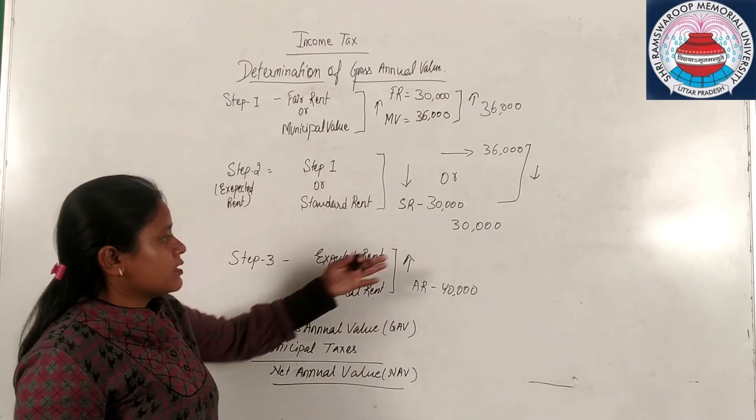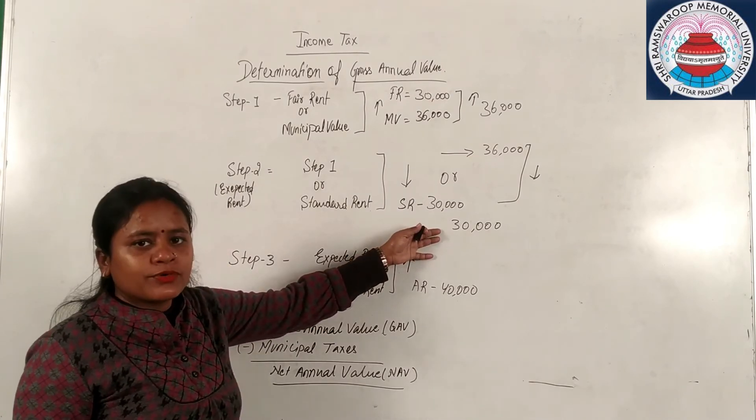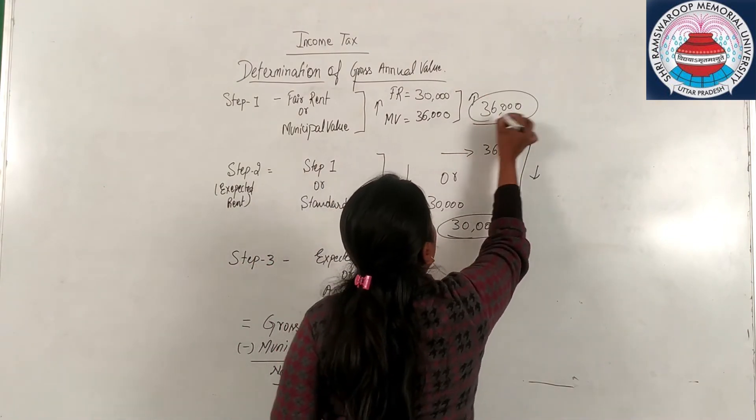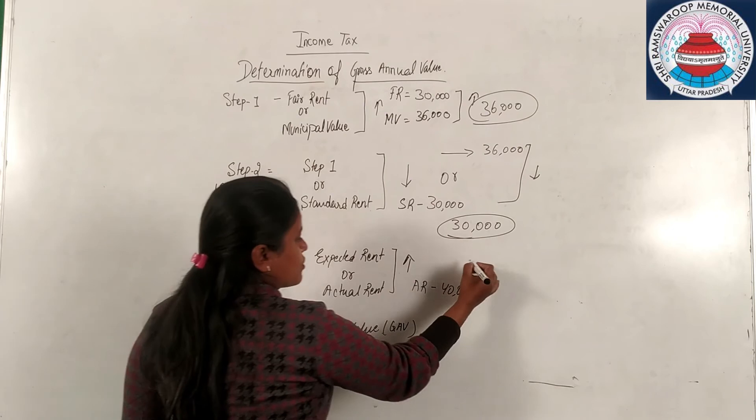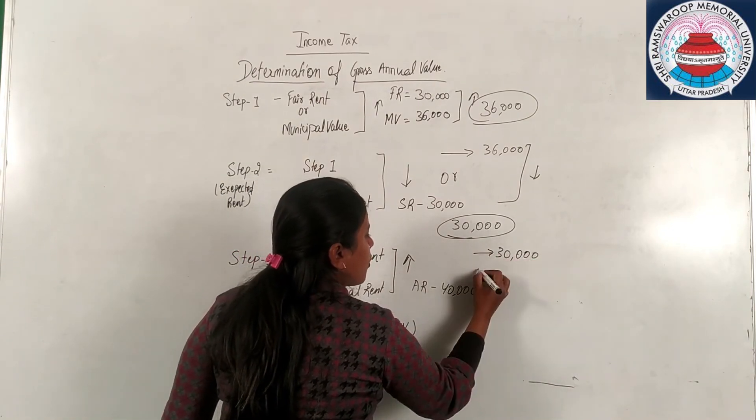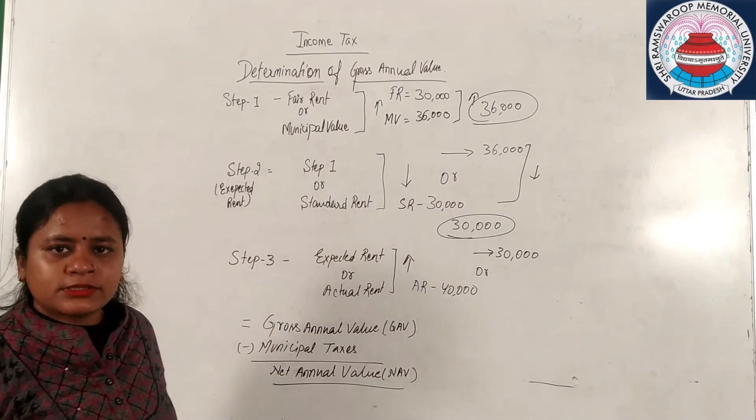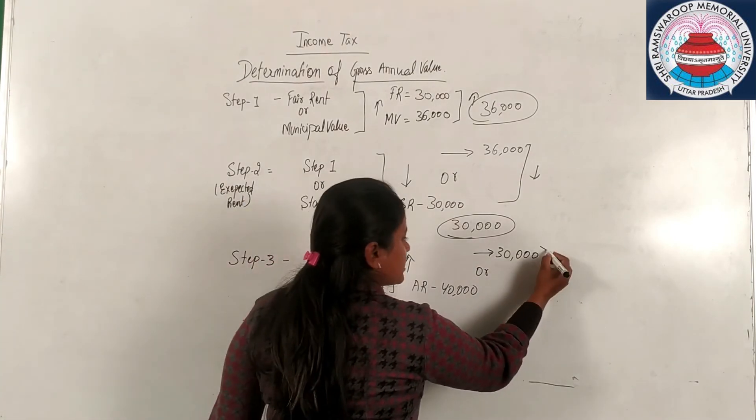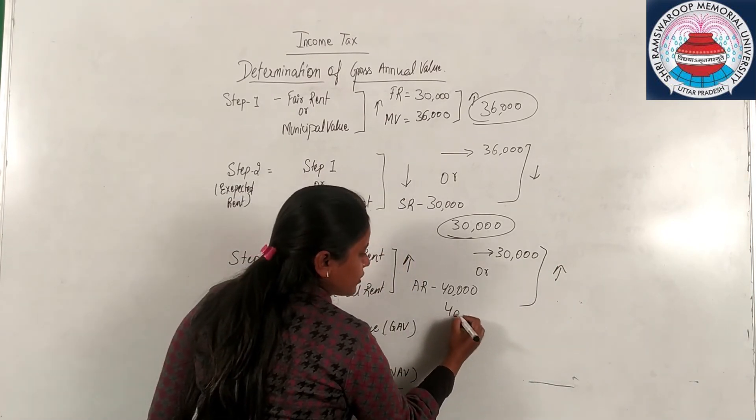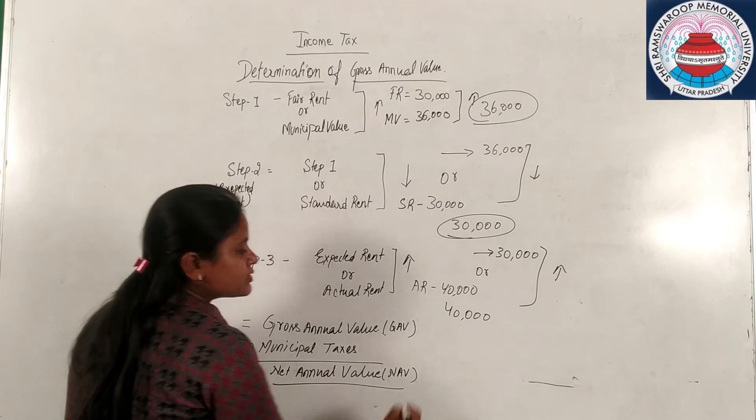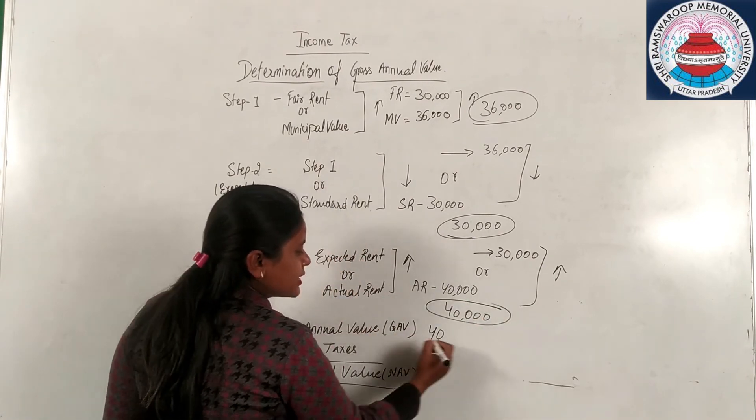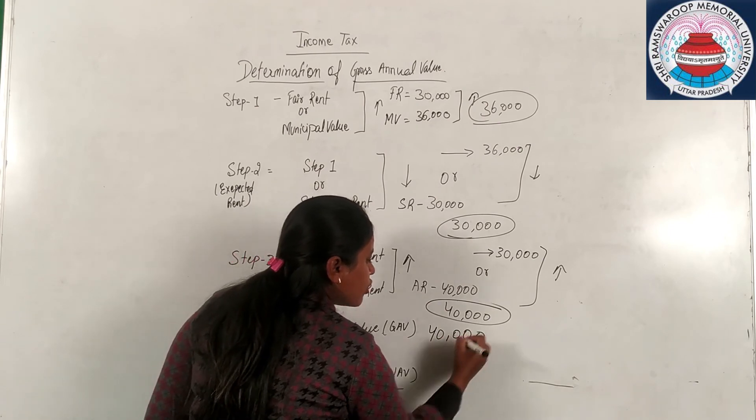In step three, step two you got 30,000 or actual rent 40,000. You will compare these two and you will get higher of these that will be 40,000. So this will become your step three answer and this will be your gross annual value, in short we call GAV.